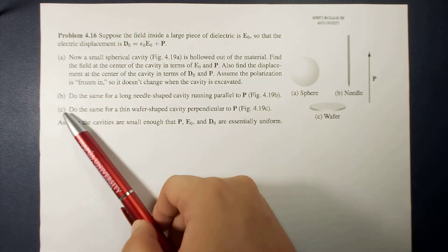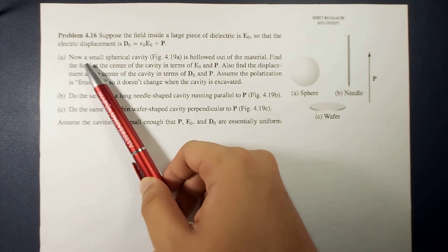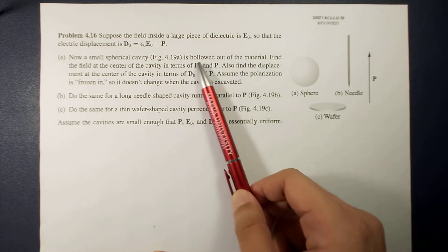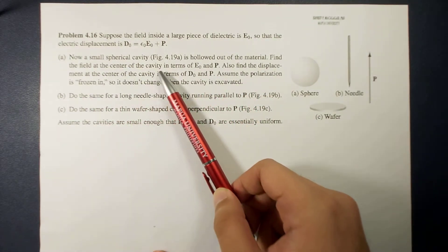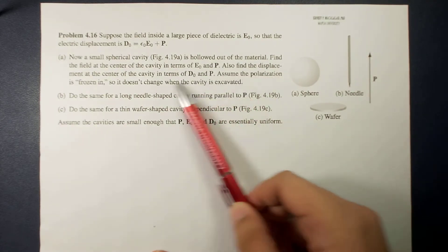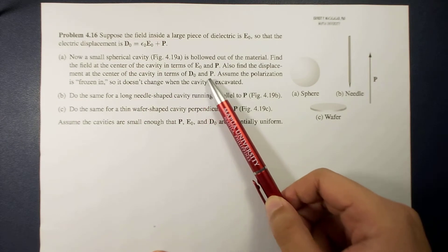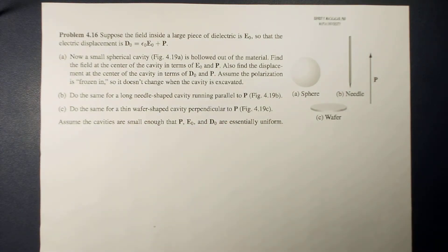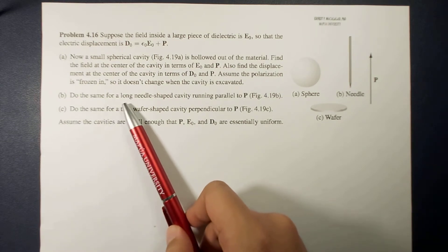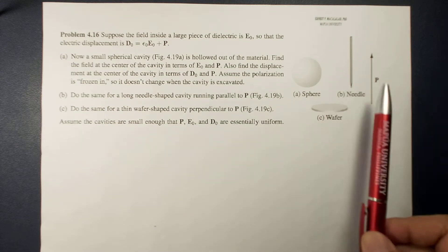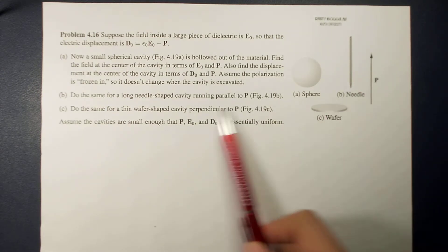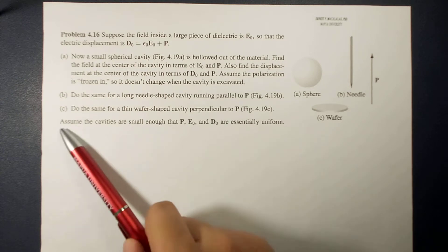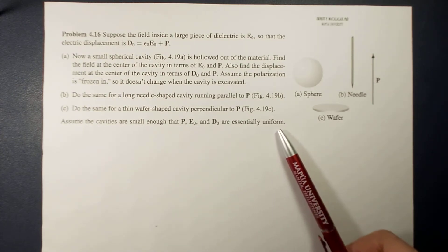We have three sub-items. First, a small spherical cavity is hollowed out of the material. Find the field at the center of the cavity in terms of E0 and P, and find the displacement at the center in terms of D0 and P. We also do the same for a long needle-shaped cavity running parallel to P, and for a thin wafer-shaped cavity perpendicular to P. Assume the polarization is frozen in and the cavities are small enough that P, E0, and D0 are essentially uniform.